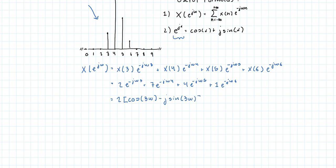Plus 7 times cosine of 4 omega minus j sine of 4 omega, plus cosine of 5 omega, and then there's a 1 in front which I'm not going to write.